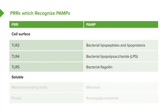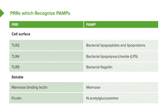And finally, soluble pattern recognition receptors: mannose-binding lectin, which recognizes the sugar mannose as its name suggests, and ficolin, which recognizes N-acetylglucosamine, another sugar.